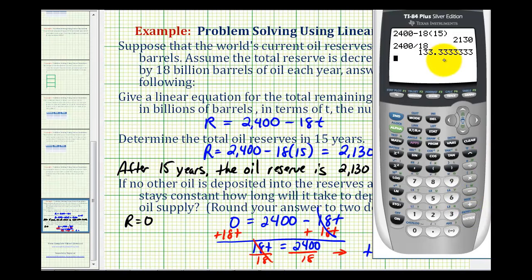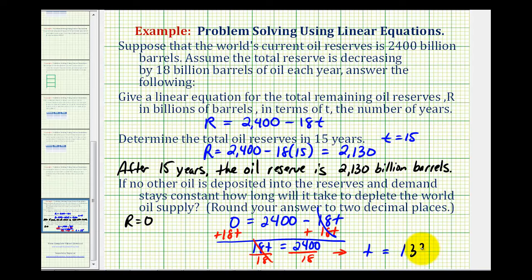We have 133.3 repeating. Notice how the directions do ask us to round to two decimal places. So in this situation, the oil reserves would be depleted after approximately 133.33 years.